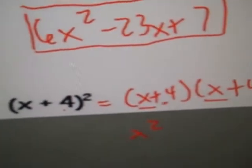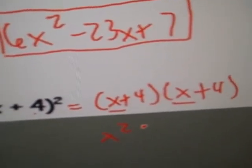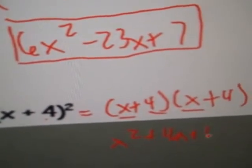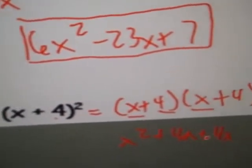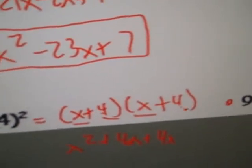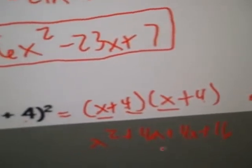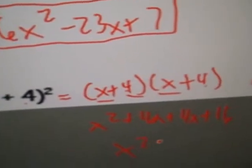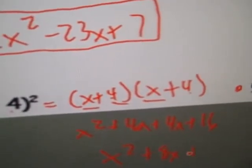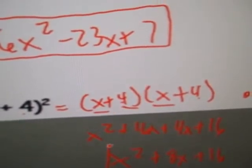First, x times x, x squared, x times 4, 4x, x times 4, 4x. That was outer and inner. That was the two steps I just did. And the last, 4 and 4. 4 times 4 is 16. And go ahead and combine like terms. 4x and 4x give you a total of 8x. And don't forget the 16 at the end. Final answer.